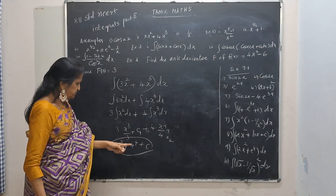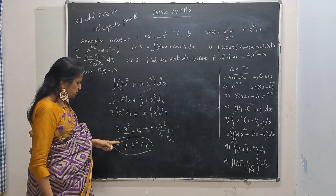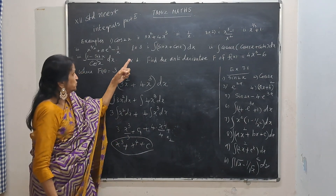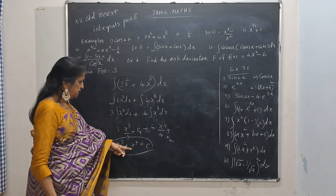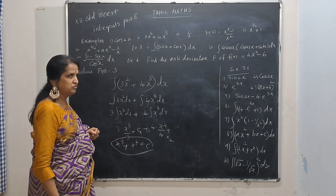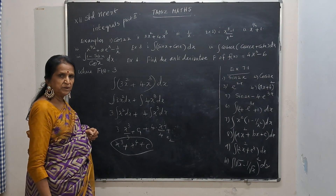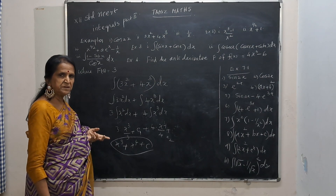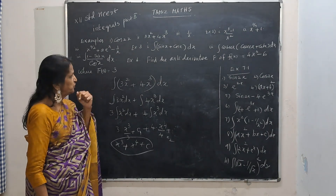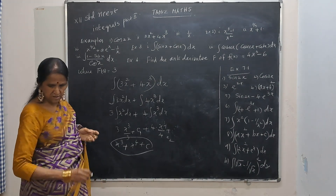Differentiate this fully: x cubed gives 3x squared, x to the power 4 gives 4x cubed, and derivative of c is 0 — so you get the answer.